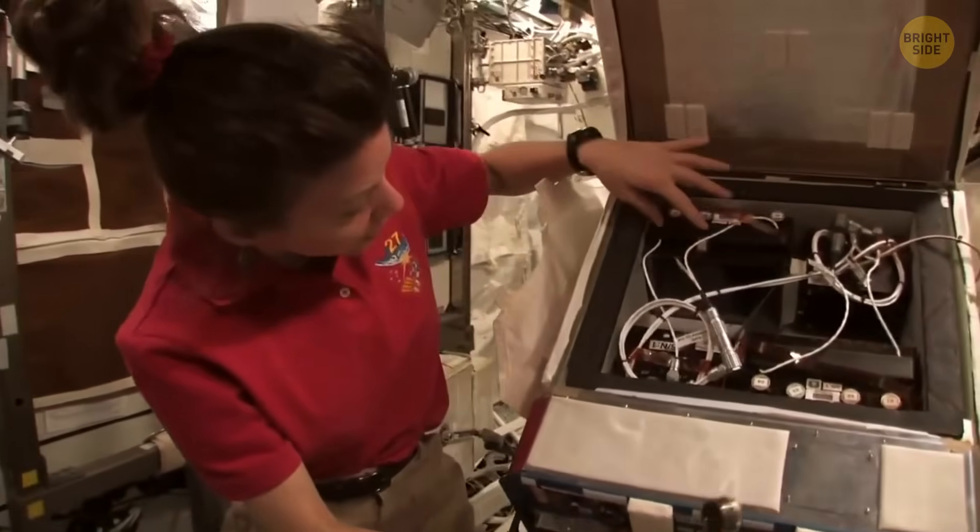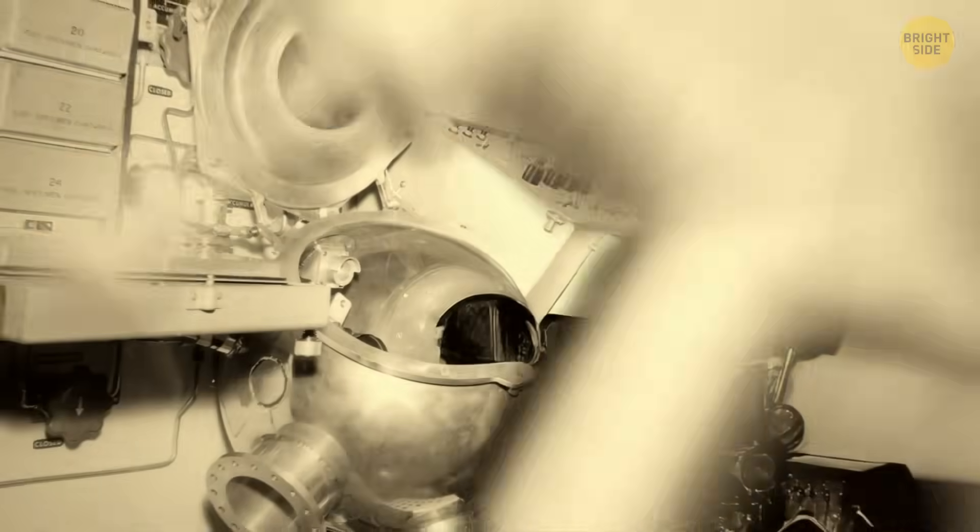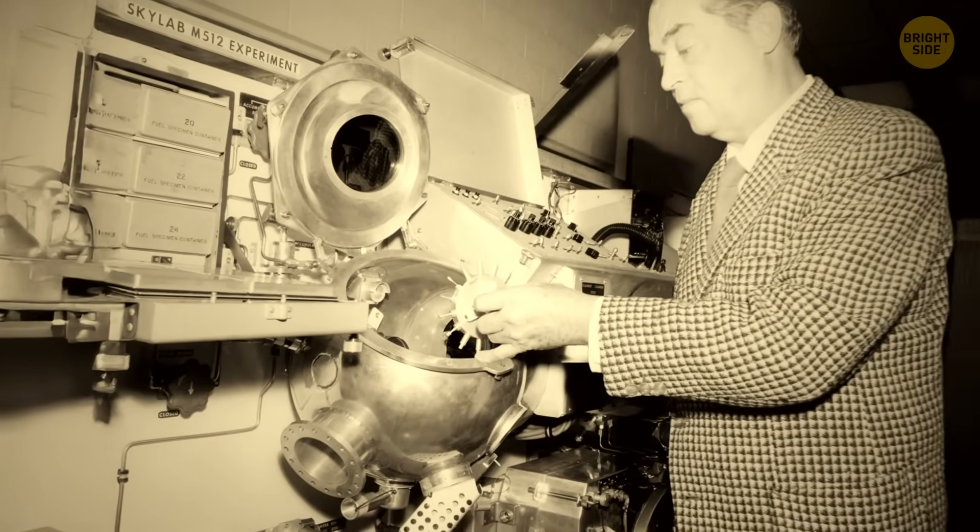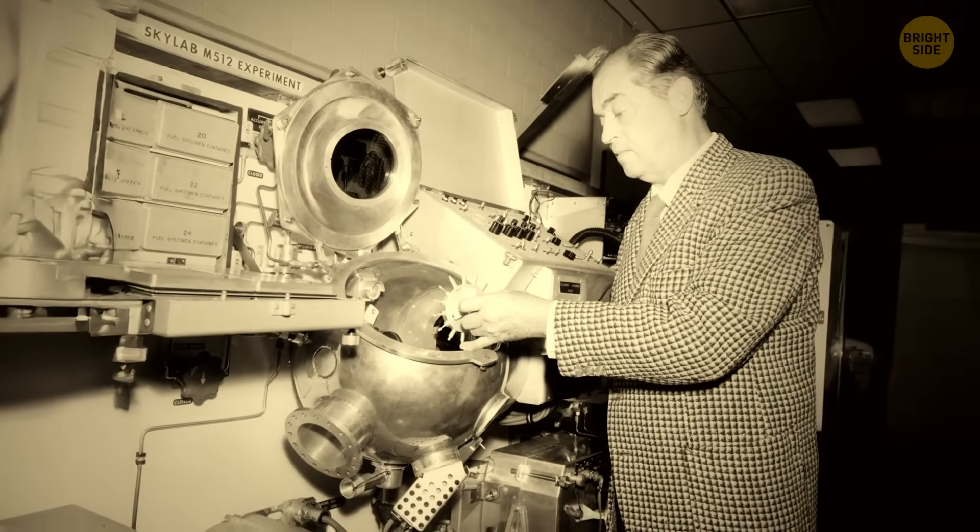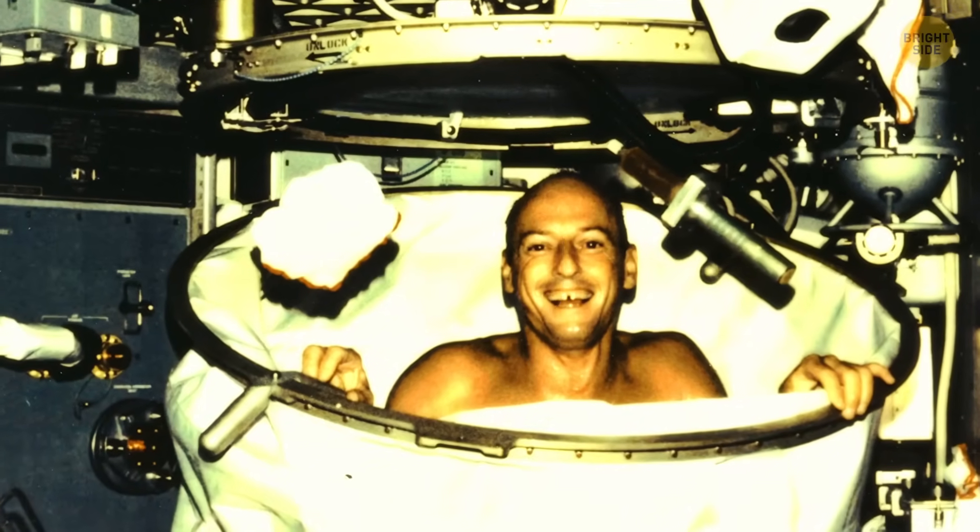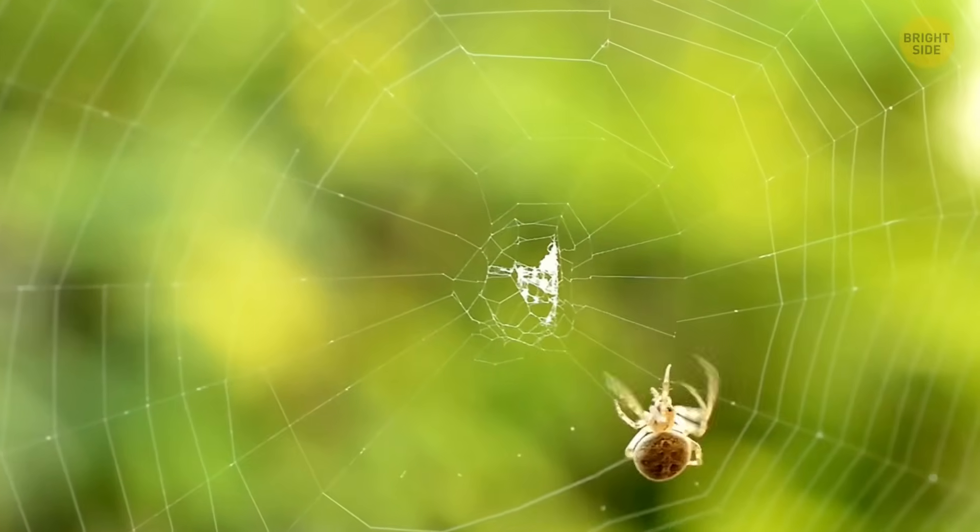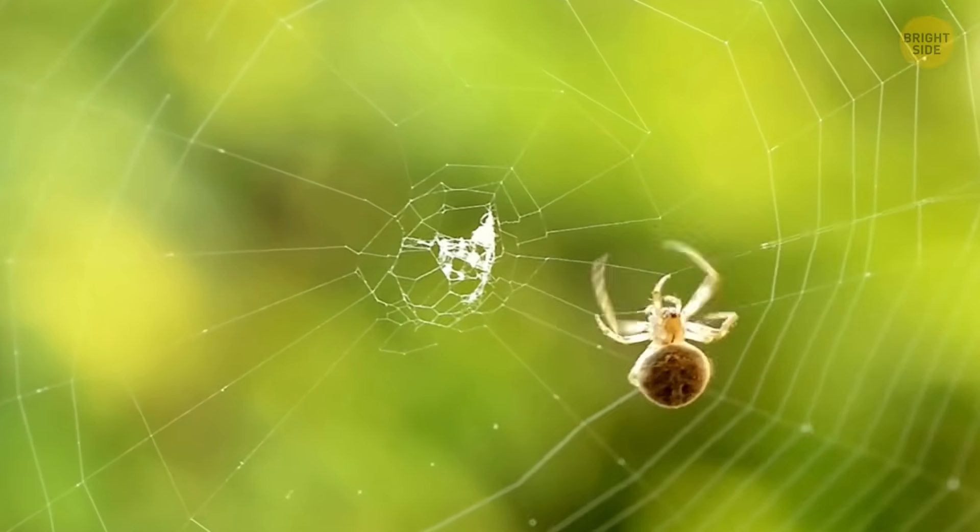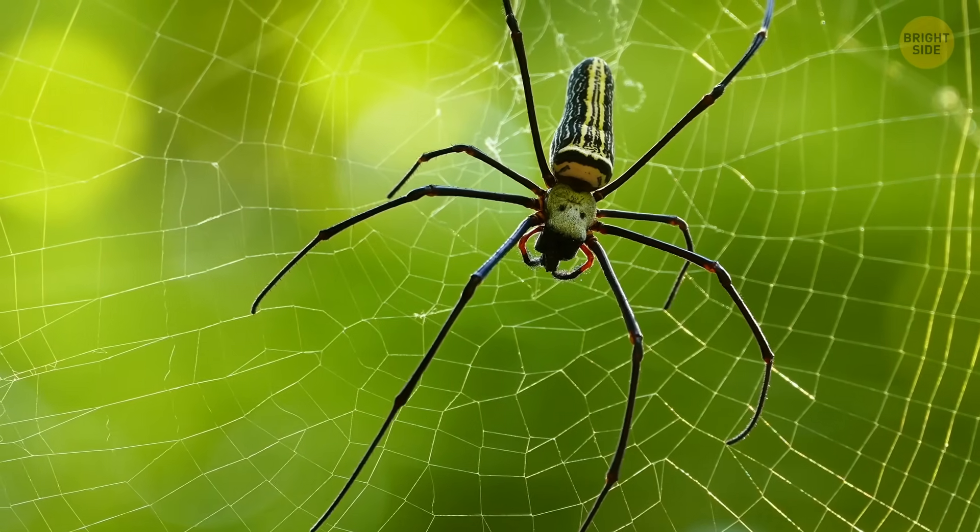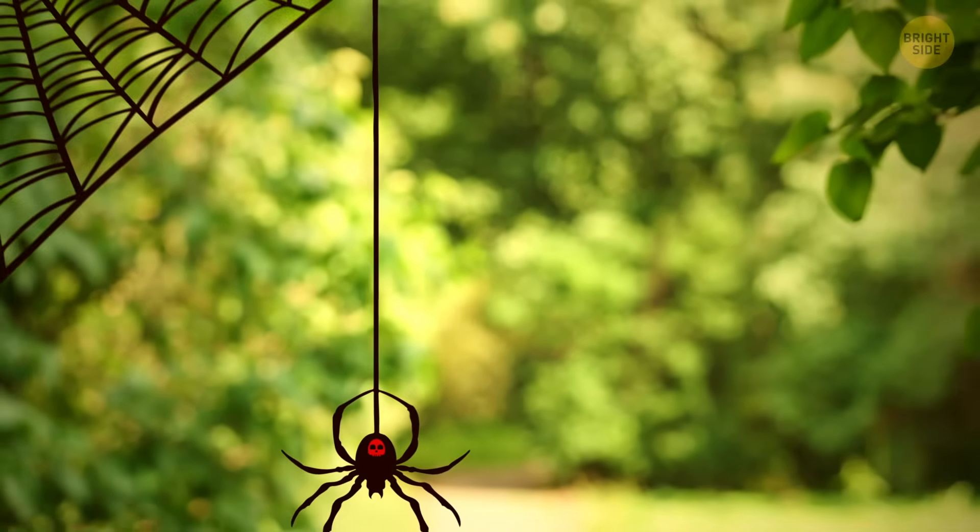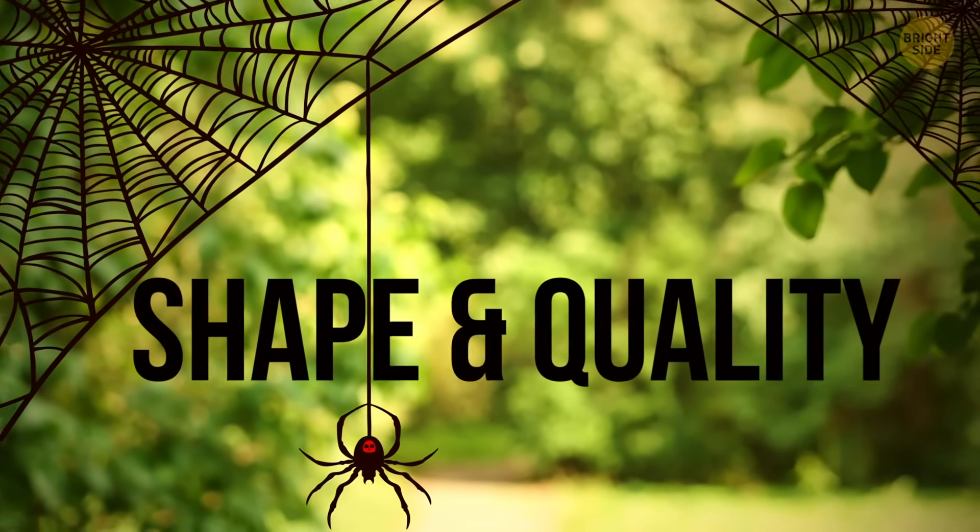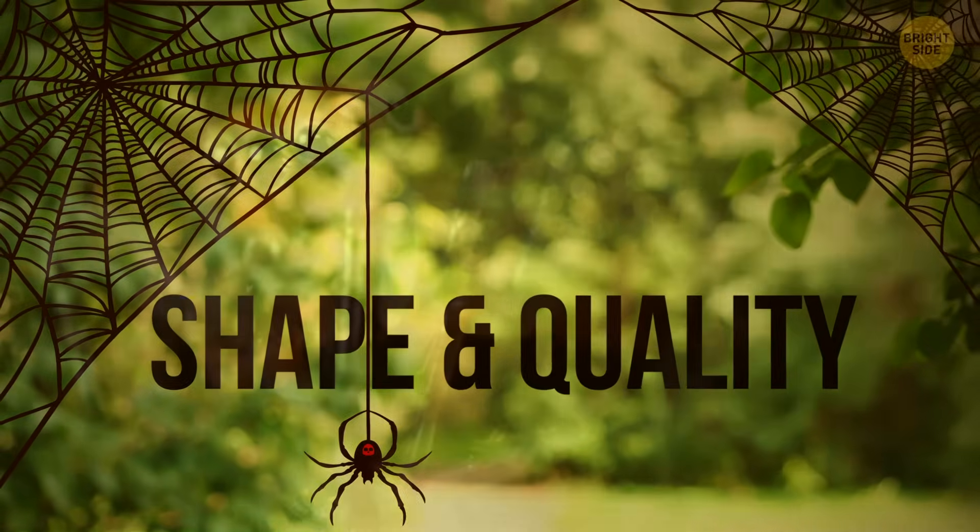Over time, the webs she produced were finer and more delicate than normal Earth versions, and scientists noticed subtle differences in thickness across the threads. But NASA wasn't just curious about spiders for the sake of spiders. Scientists wanted to figure out how near-microgravity messes with the central nervous system, not just in spiders, but in animals in general, humans included. Spiders actually make the perfect test subjects because their webs are basically brain maps in silk. You can tell how well the spider's nervous system is working just by looking at the shape and quality of the web it spins.